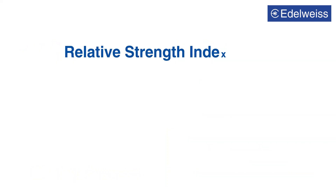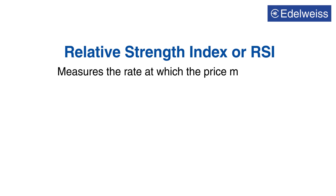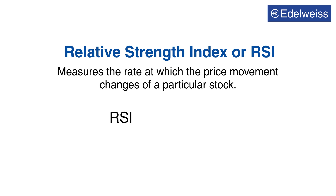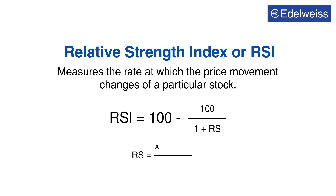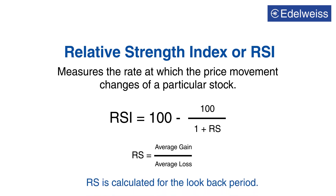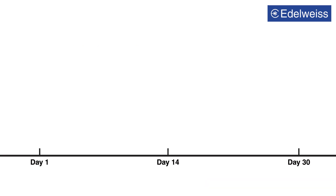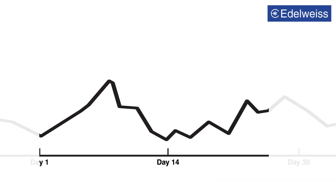Being a leading momentum indicator, RSI measures the rate at which the price movement changes of a particular stock. The RSI is calculated as 100 minus 100 divided by 1 plus RS, where RS stands for average gain divided by average loss. RS is calculated for the look-back period; the default time period is 14.